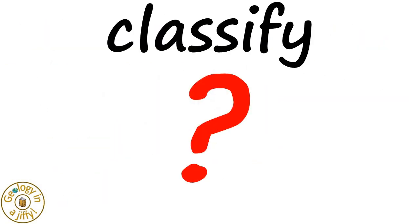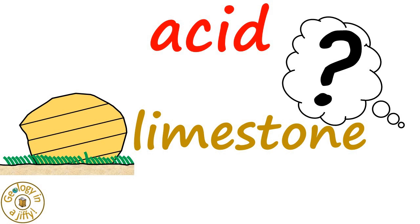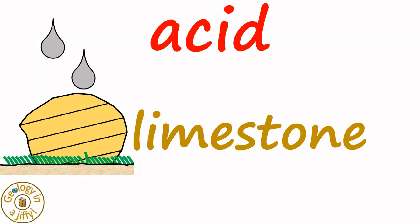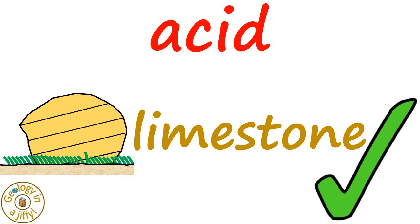Our last way to work out if a rock might be sedimentary is by using acid. Take this rock, which we think might be a layered limestone. When we drip acid onto the rock and it reacts and fizzes, it tells us that the rock is limestone.